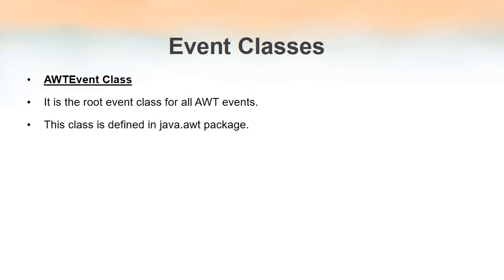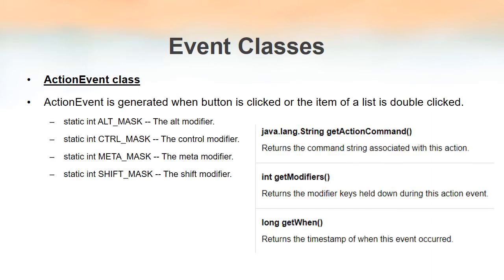The next class is the Java AWT event class. AWT stands for Abstract Window Toolkit, which is a collection of components from which we can create forms or graphical user interfaces — it includes frames, buttons, text fields, etc. The AWT event class is the root event class for all AWT events, meaning events related to buttons, text fields, etc. This AWT event class is defined inside the java.awt package.